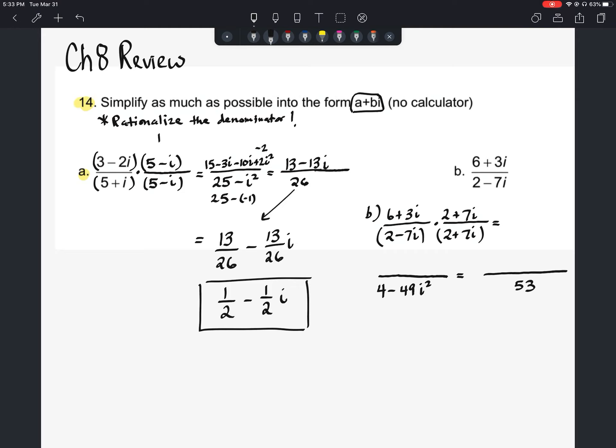And then on the top, we're going to end up foiling all of this. So when I do my 6 times my 2, I'm going to get 12. When I do my 6 times my 7i, that would be 42i. Then we will do our 3i times 2, which would be 6i.